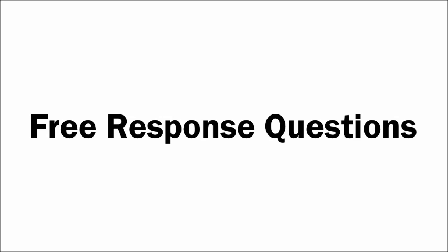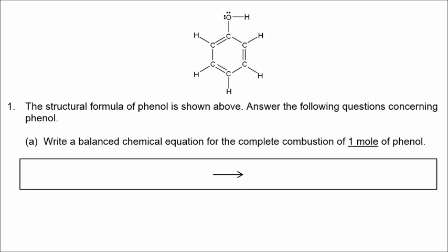Now we're on to the free response questions. Number 1 gives us a structural formula of phenol. We write the molecular formula as C6H6O. For the combustion equation, oxygen is a reactant and we produce carbon dioxide and water. Balancing: we need 6 carbons on the right, 6 hydrogens on the right, and a total of 15 oxygens on the left, giving coefficients of 1, 7, 6, and 3.